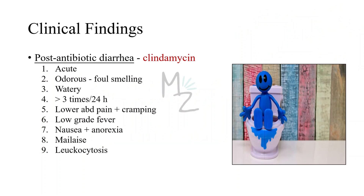Clinical findings: C. difficile infection is usually termed post-antibiotic diarrhea because it follows antibiotic therapy, typically clindamycin. It can be acute and the diarrhea is foul-smelling and watery, usually not bloody. Neutrophils are found in the patient's stool. Fever and abdominal pain often occur, and there is a yellow-whitish plaque on the colonic mucosa. The organism rarely enters the bloodstream.